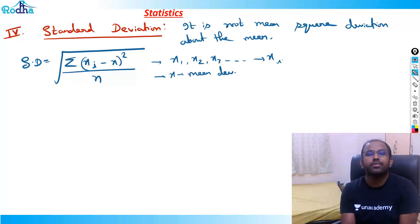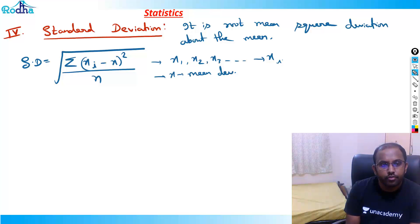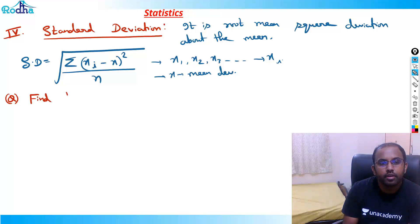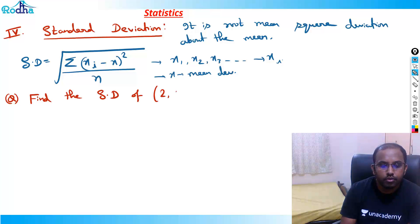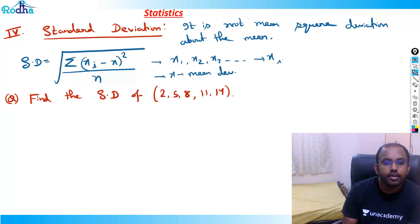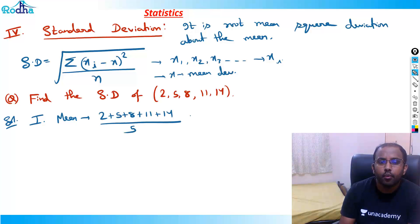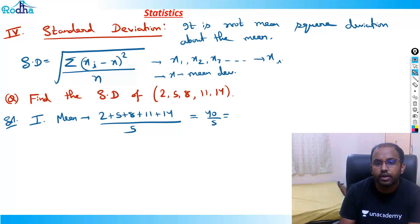Just remember the steps: we need to find the standard deviation of 2, 5, 8, 11, and 14. In the first step, we calculate the mean: (2 + 5 + 8 + 11 + 14) divided by 5 = 40 / 5 = 8.